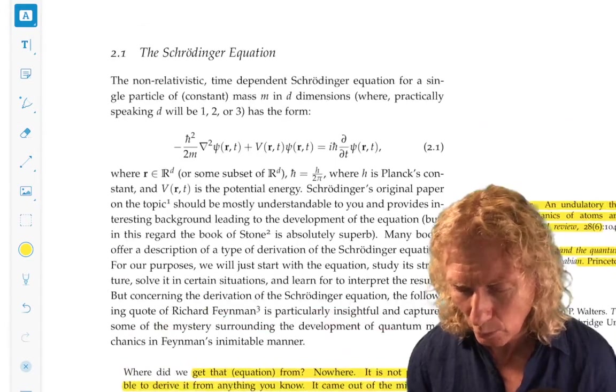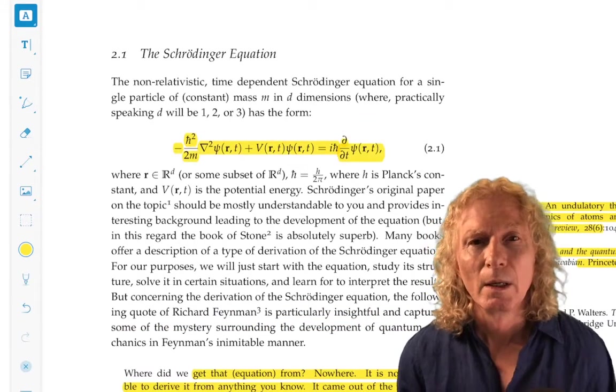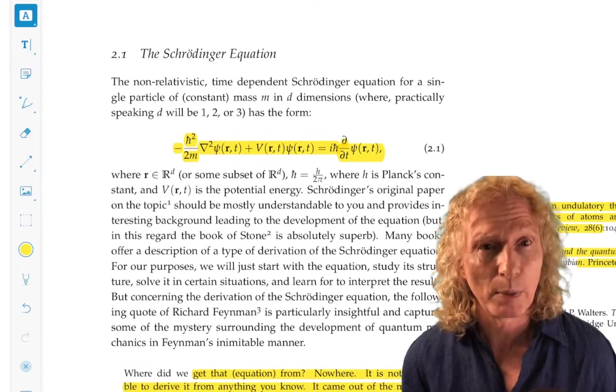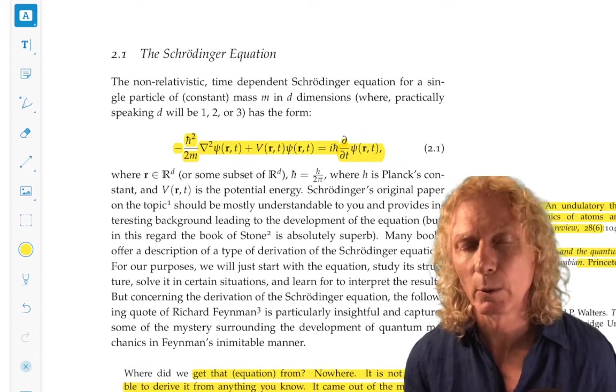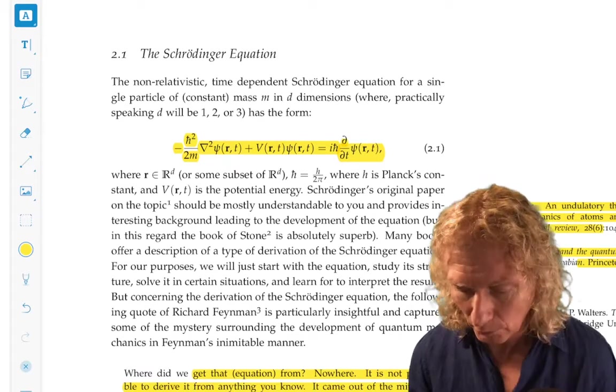So this equation, going back to this, the unknown is the function ψ of r and t. R is space. It's going to be one-, two-, or three-dimensional. Mostly we're going to be dealing with one-dimensional dynamics in this course.